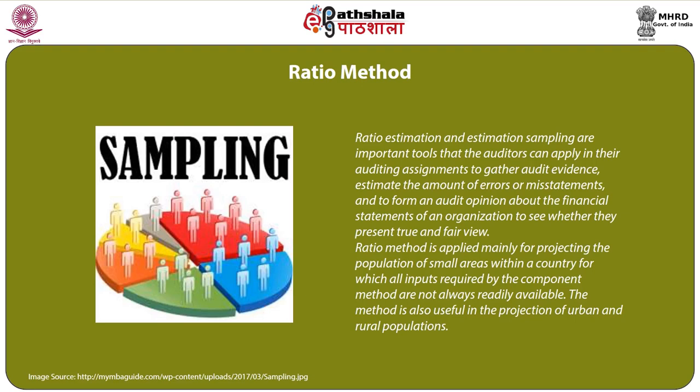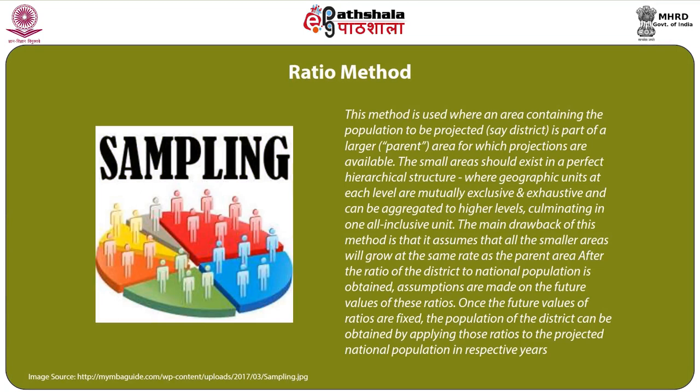The ratio method is applied mainly for projecting the population of small areas within a country for which all inputs required by the component method are not always readily available. It is also useful in projecting urban and rural populations. The method is used where an area such as a district is part of a larger or parent area for which projections are available. The small areas should exist in a perfect hierarchical structure — geographic units at each level are mutually exclusive and exhaustive. The main drawback is that it assumes all smaller areas will grow at the same rate as the parent area. After obtaining the ratio of district to national population, assumptions are made on future values of these ratios. Once fixed, the district population is obtained by applying those ratios to the projected national population.